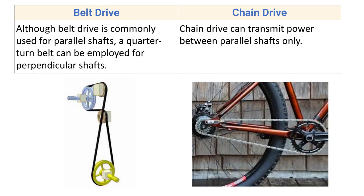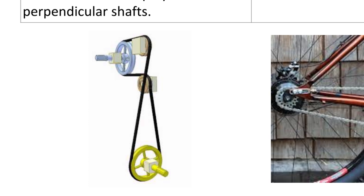Belt drive is commonly used for parallel shafts, but a quarter-turn belt can also be employed for perpendicular shafts. So while belt drive is primarily used when the two shafts are parallel to each other, when shafts are perpendicular a quarter-turn belt arrangement can be used to transmit power, though this is rare in practice.